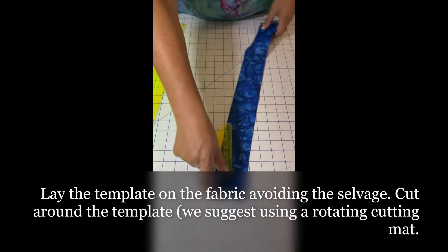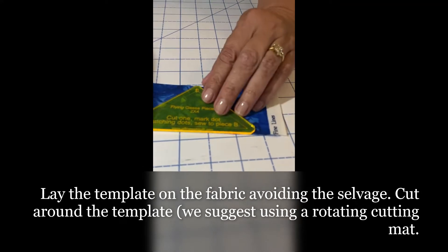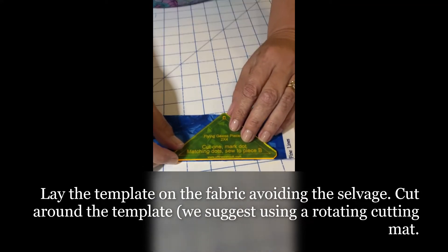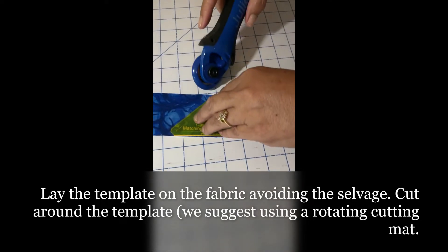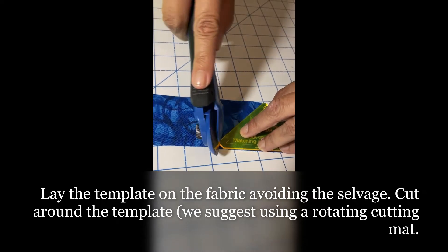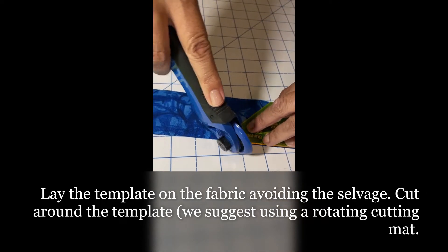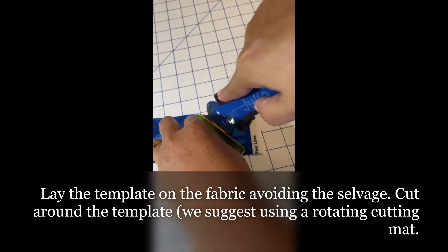I take my template and make sure I'm missing my selvedge there, so I'm going to start right in here and go ahead and cut, making sure that I get my little extra edges here. This is where the rotating cutting mat comes in really handy.